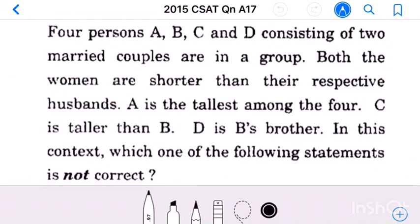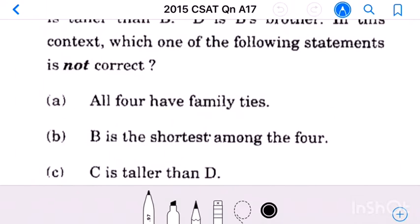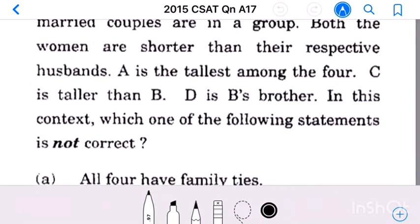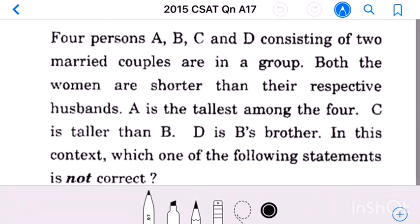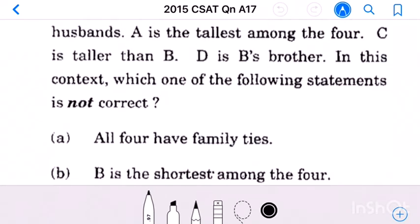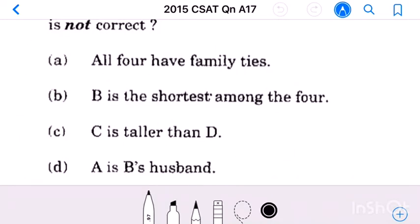Question number 17: Four persons A, B, C and D consisting of two married couples are in a group. Both women are shorter than their respective husbands. A is the tallest among the four, C is taller than B, and D is B's brother. Which one of the following statements is not correct?